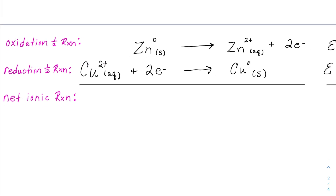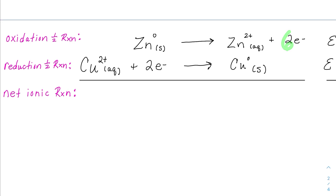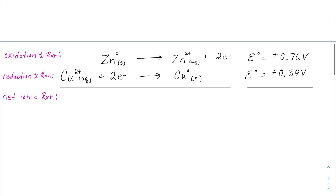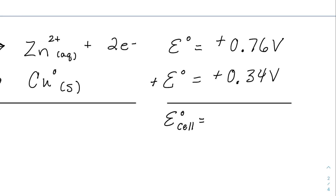Let's play a quick what-if game. What if my two half reactions didn't have the same number of electrons? Say one had 3 electrons and the other had 2. I would multiply the first reaction by 2 to get 6, and multiply the second by 3 to also get 6. Importantly, if I did that, I would NOT multiply the voltage — I would still just reverse one of them as an oxidation reaction and add the two voltages together to get the cell potential.